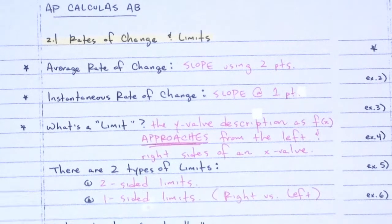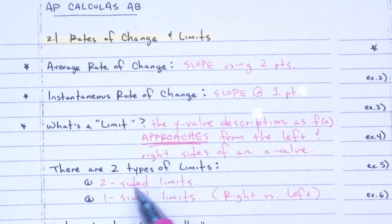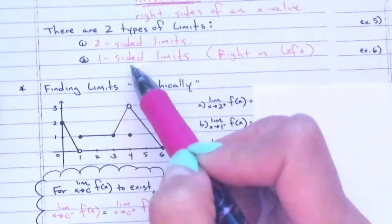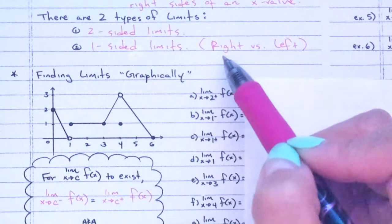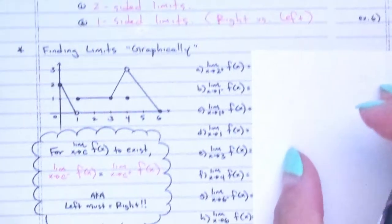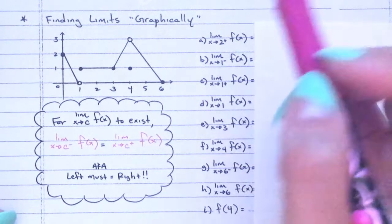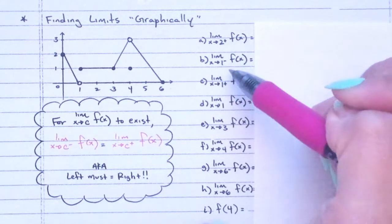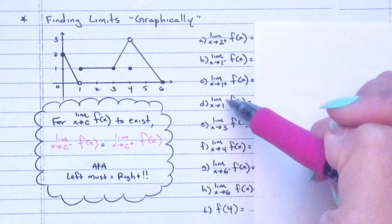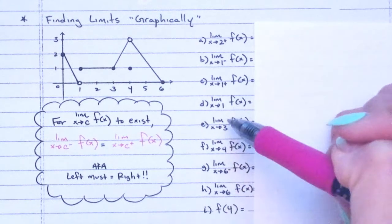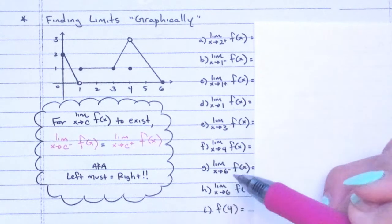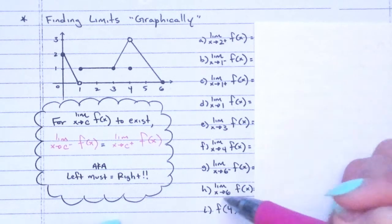The limit is the y value that approaches on the left and right. There are two kinds: a two-sided limit, which is the general limit — when we say 'limit' we mean two-sided — and a one-sided limit, which is either a right limit or a left limit. A right limit is not negative one; the superscript plus or minus indicates direction, not sign.